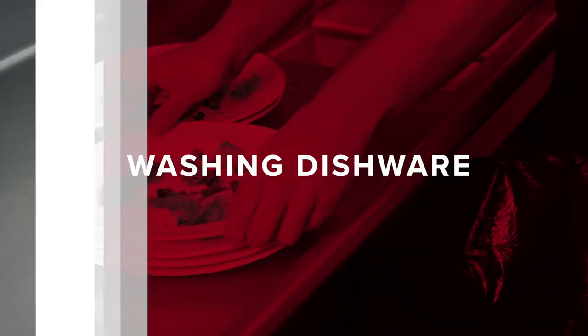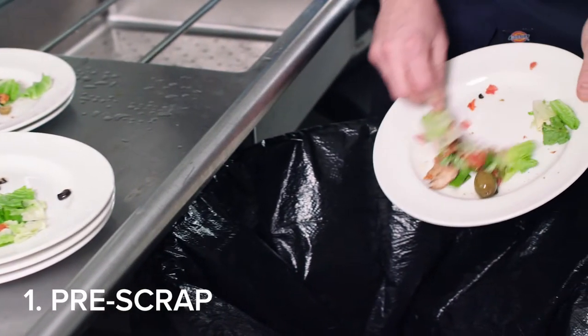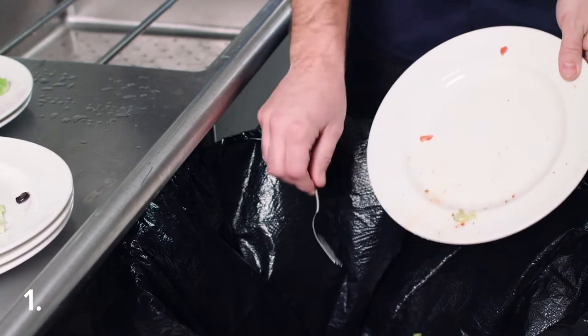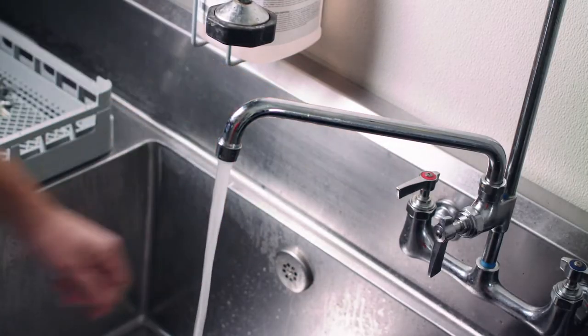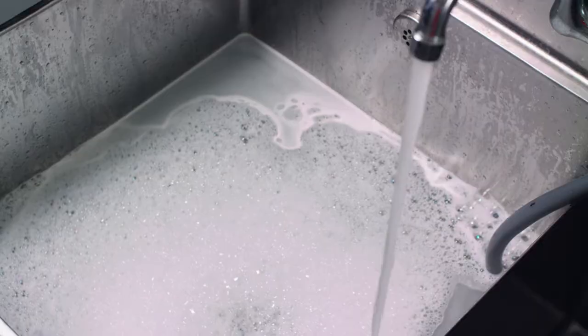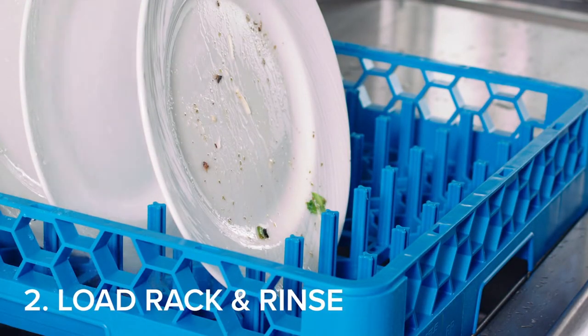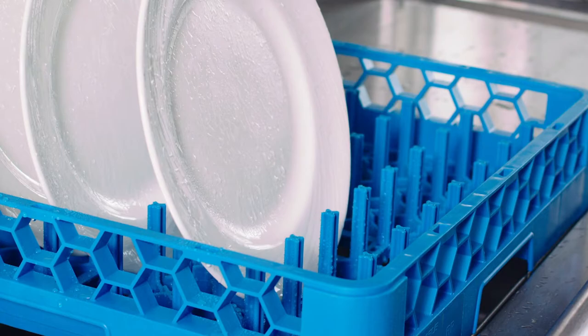Washing dishware. Begin by hand scraping dishware to remove food soil and other debris. Heavily soiled dishware may require pre-soaking. Place the pre-scraped dishware into a peg rack and rinse thoroughly. Do not overload the rack.